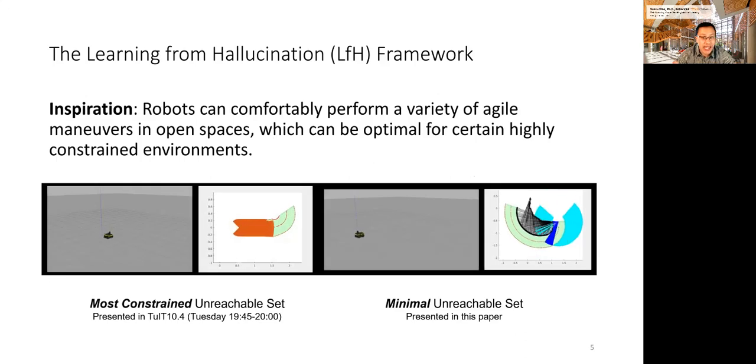LFH's inspiration is that robots can comfortably perform a variety of agile maneuvers in open spaces. Those maneuvers in open spaces can be optimal for certain highly constrained environments. By generating or hallucinating those spaces, we can acquire many training data. Today, I am going to talk about the hallucination method on the right, to hallucinate a minimal unreachable set to make a motion plan collected in open space optimal. We have presented the other method on the left, to hallucinate the most constrained unreachable set during a Tuesday session.